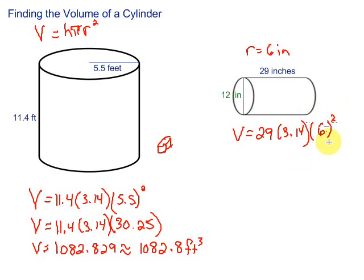We need to square that 6 first. So we have V equals 29 times 3.14 times 6 times 6. Remember, squared means we multiply this that many times, times 36.